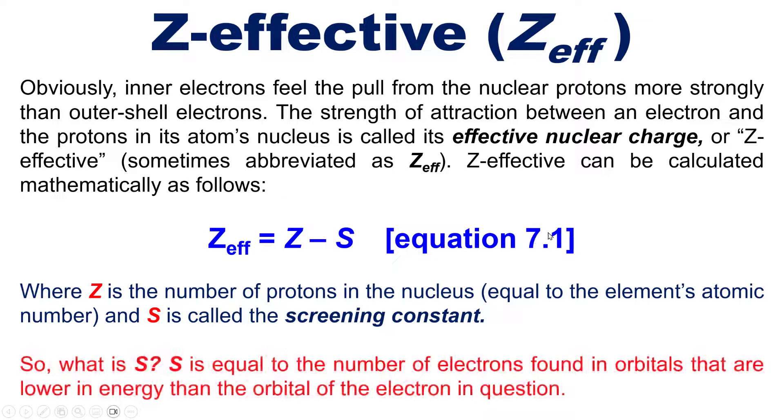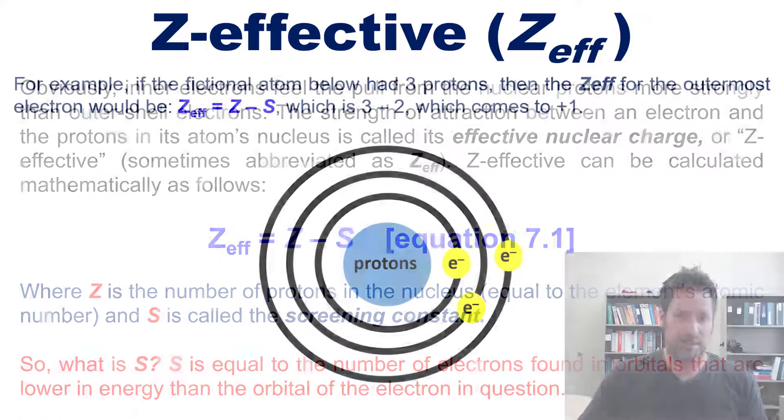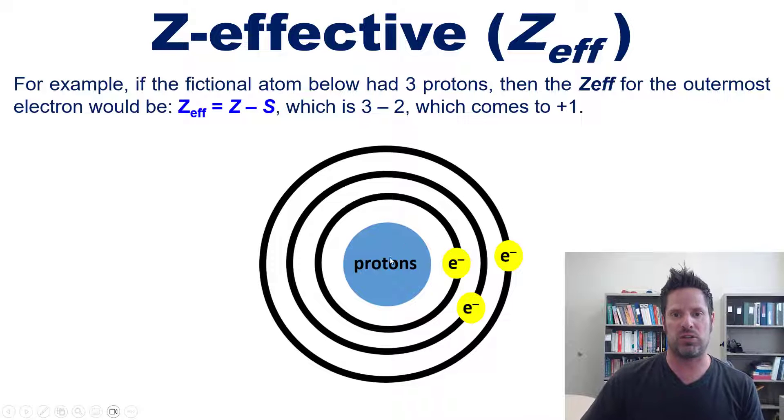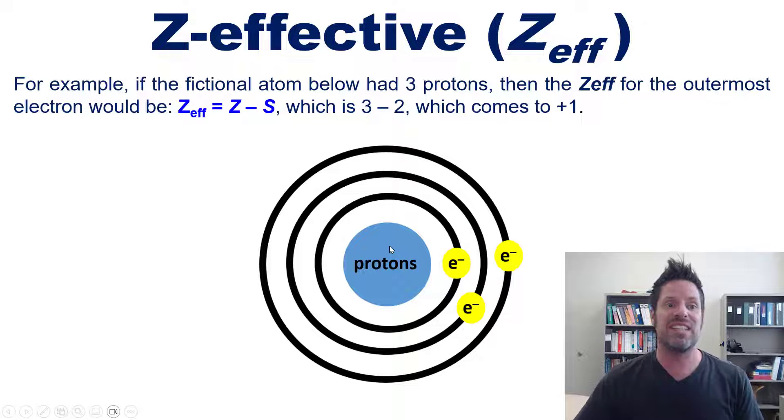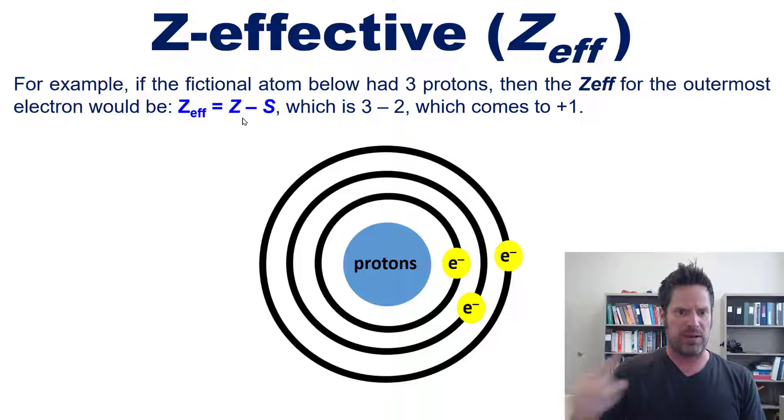Z-effective can be calculated mathematically as Z-eff = Z - S, where Z is the number of protons in the nucleus (equal to that element's atomic number), and S is something called the screening constant. What is S? S equals the number of electrons found in lower-level orbitals.